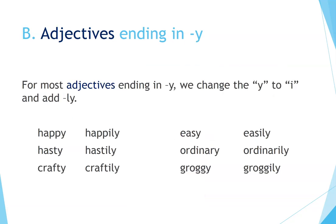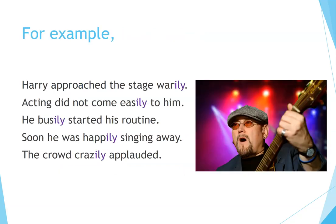B. Adjectives ending in -Y. For most adjectives ending in -Y, we change the Y to I and add -LY. For example: happy → happily, easy → easily, hasty → hastily, ordinary → ordinarily, crafty → craftily, groggy → groggily. Harry approached the stage warily. Acting did not come easily to him. He busily started his routine. Soon he was happily singing away. The crowd crazily applauded.